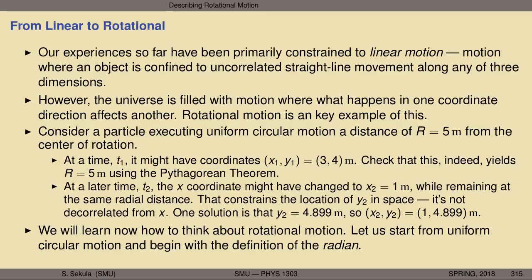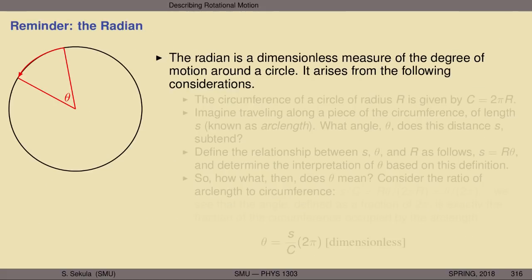Let's begin from something familiar — uniform circular motion — and go back to think about the definition of angle in our standard international system of units: the radian. What is the radian? Let me remind you where the definition of the radian comes from. Radians are dimensionless measures of the degree of motion around a circle.